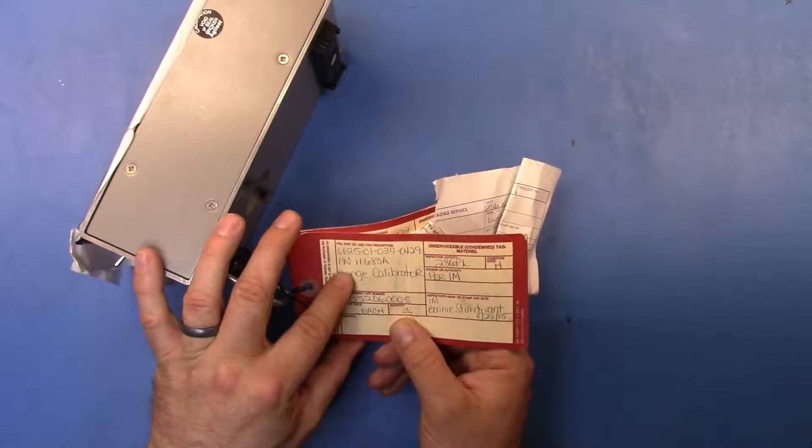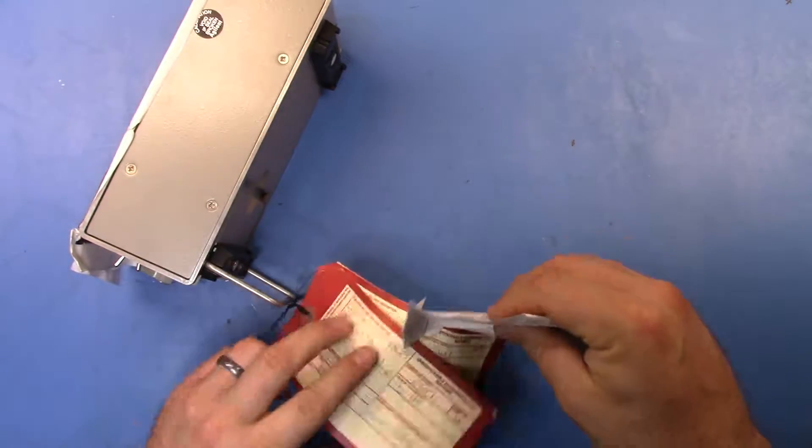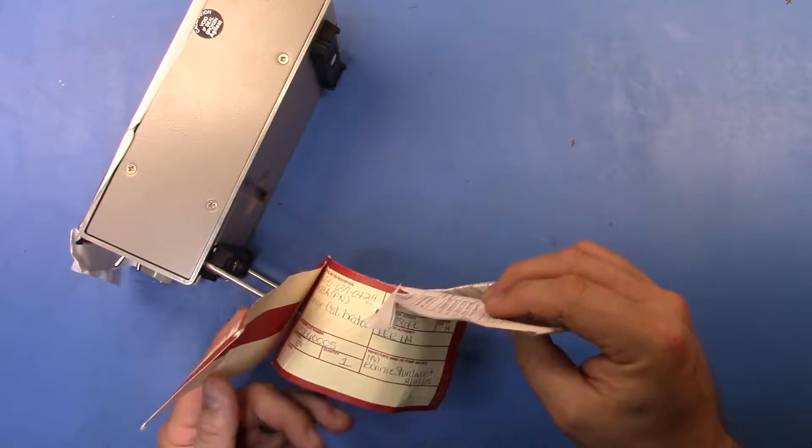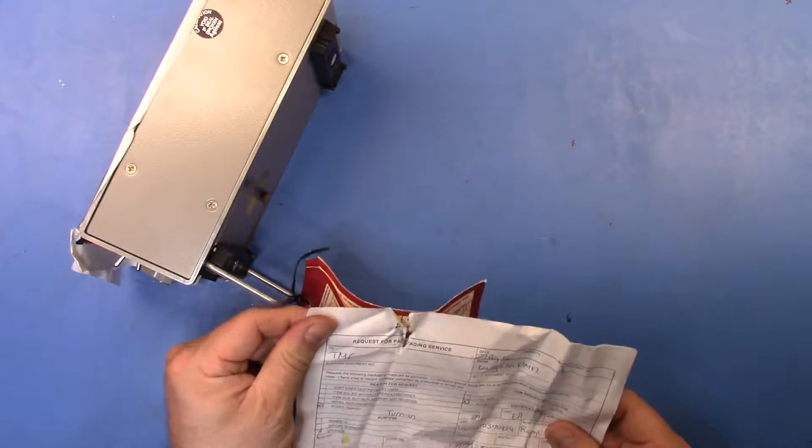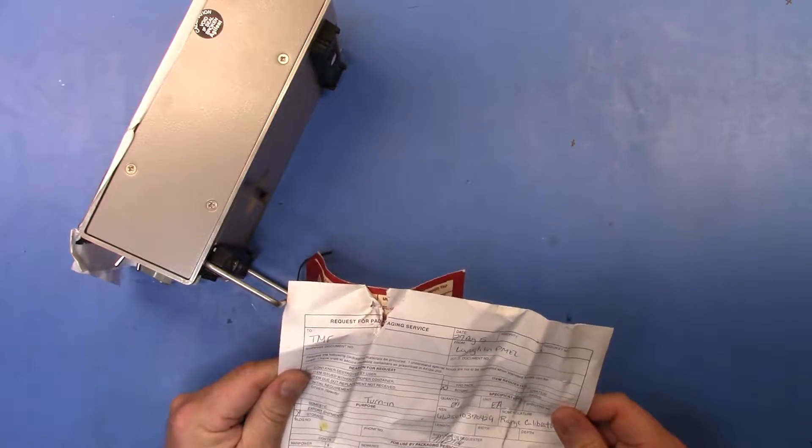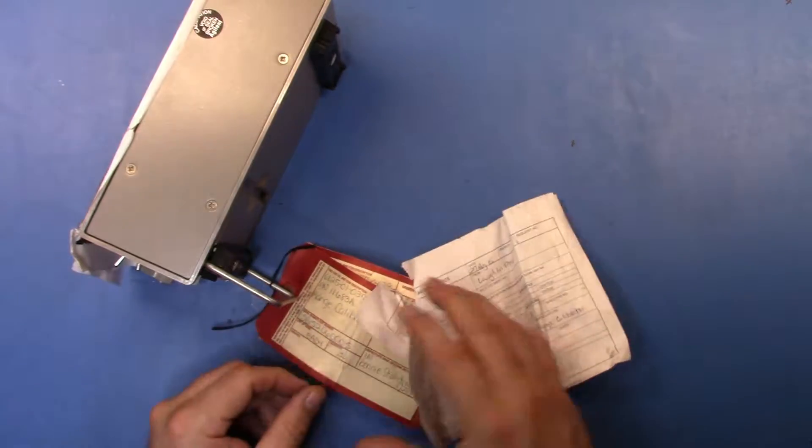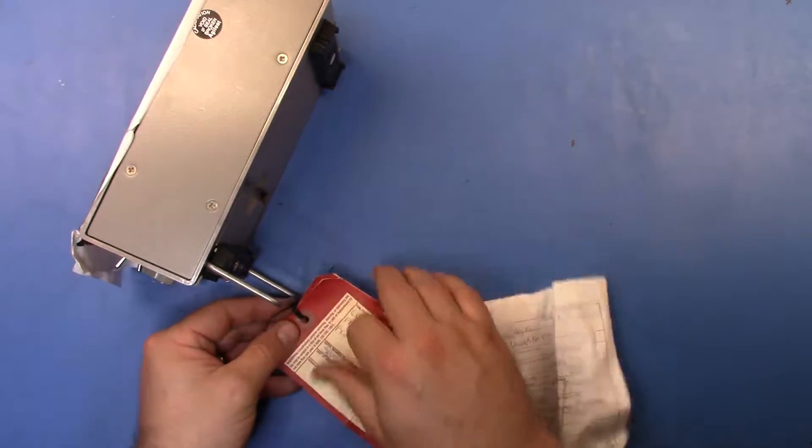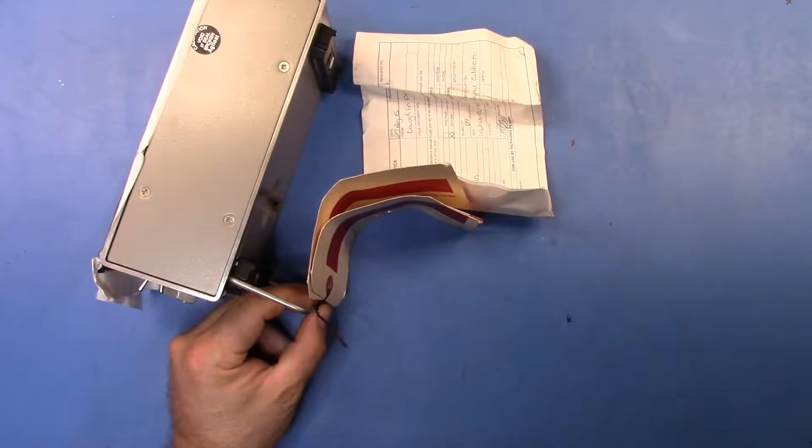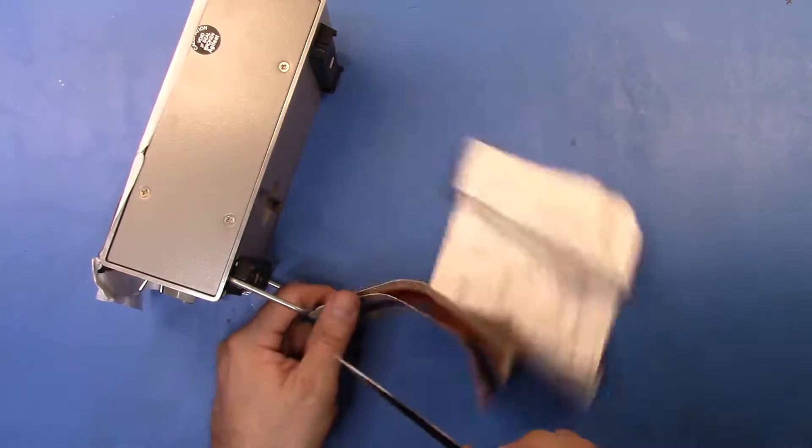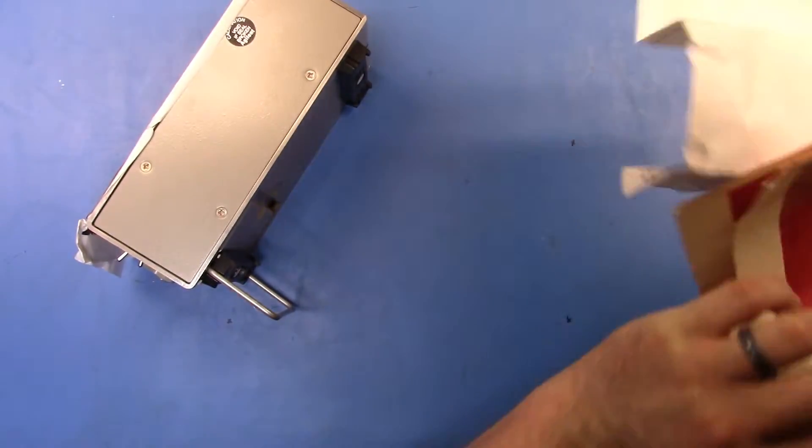It had these little tags on it. You can see that it's an 11683A range calibrator. It has the inspector's name on it, turn in for storage on the documentation. There does not appear to be anything wrong with it at all. Let's take that little string off. I may just use a knife here.